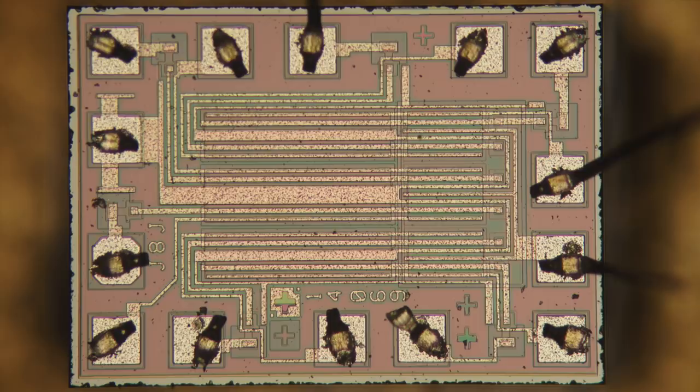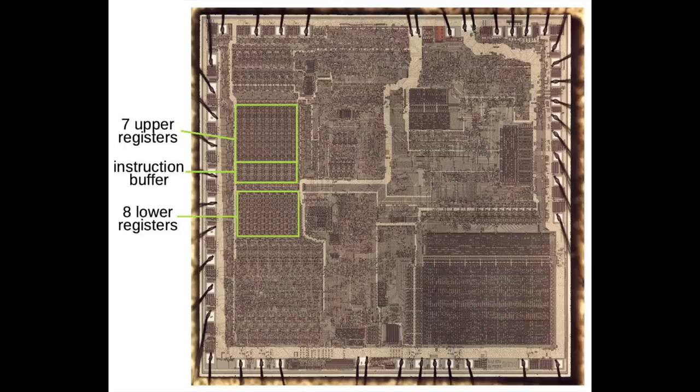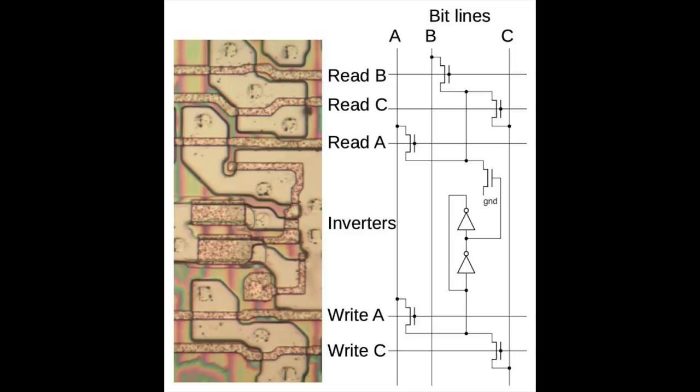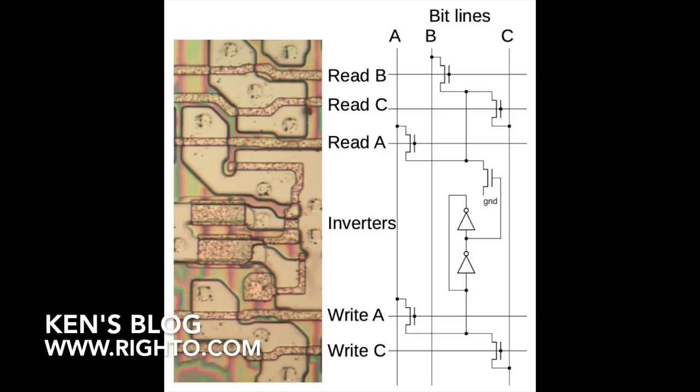Of course, this was child's play for Ken. In his blog, he routinely reverse engineers chips with tens of thousands of transistors, such as this Intel 8086, down to the transistor level. If you are interested in this kind of deep dives, go to his blog at the address below.